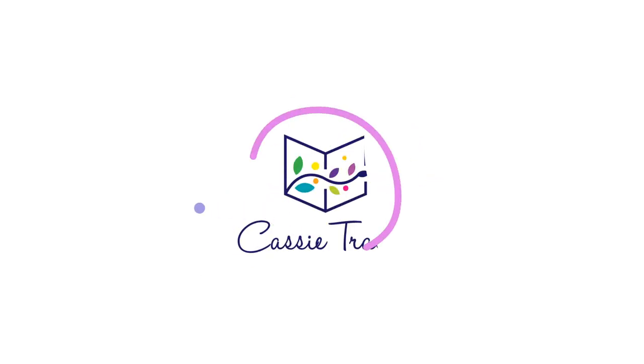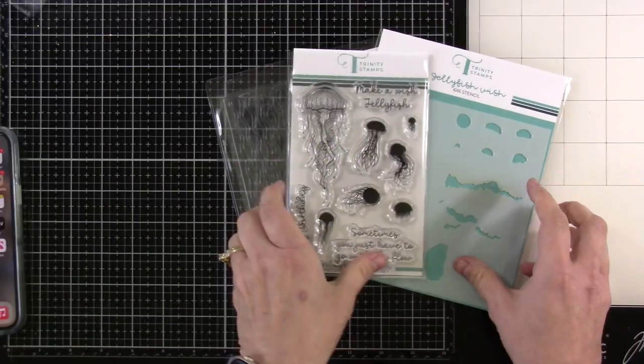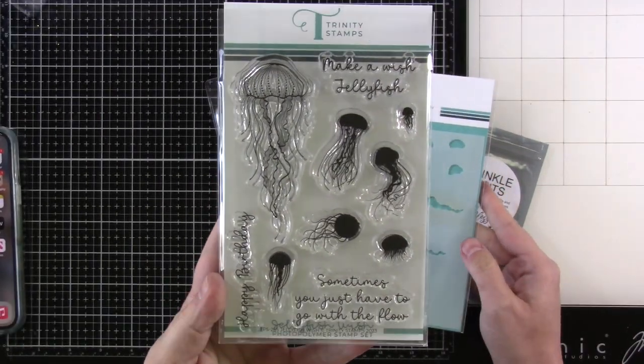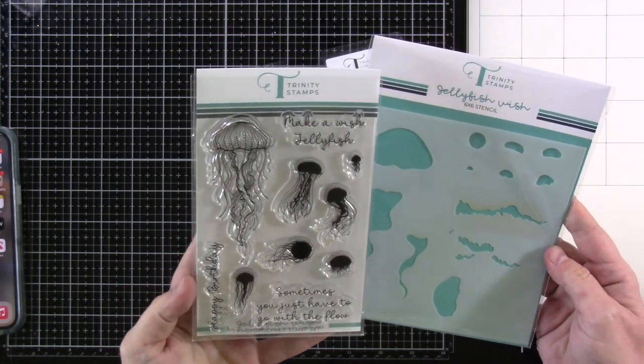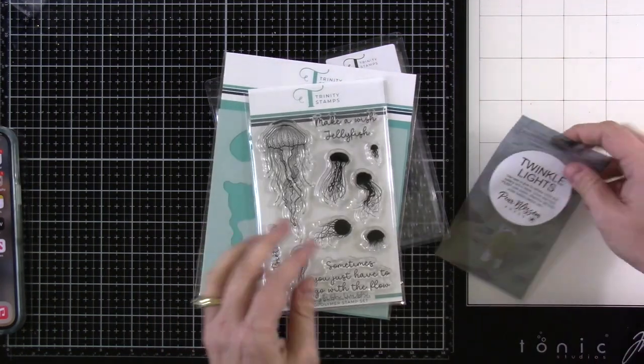Hello there friends, it's Cassie. Welcome back for another video here on my YouTube channel. Today we are going to be playing with some Pear Blossom Press stuff along with these items from Trinity Stamps. We're going to be making a jellyfish card and we have this matching jellyfish wish stamp and stencil.